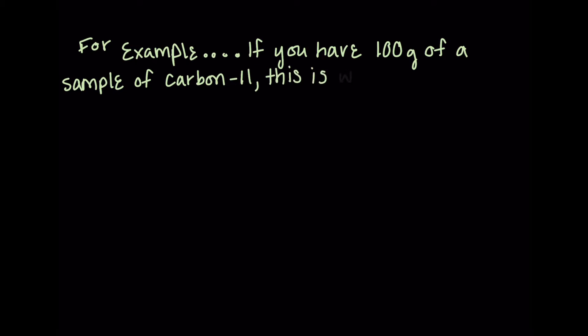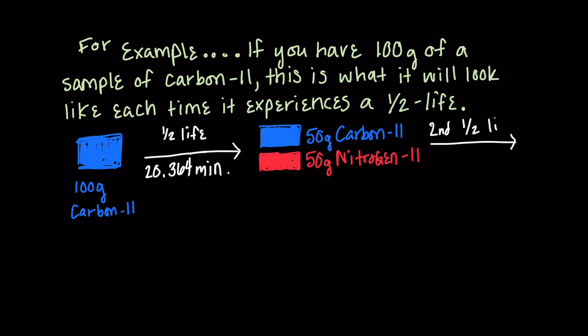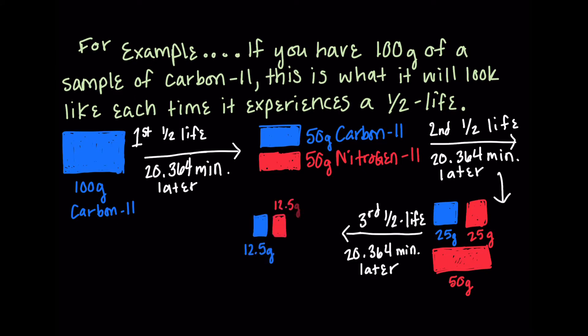So let's say that you have 100 grams of carbon-11. Sometimes it helps to have a visual idea of what's happening. So I'm choosing red and blue. Carbon-11 is our sample and nitrogen-11, the red, is what it's going to decay into.